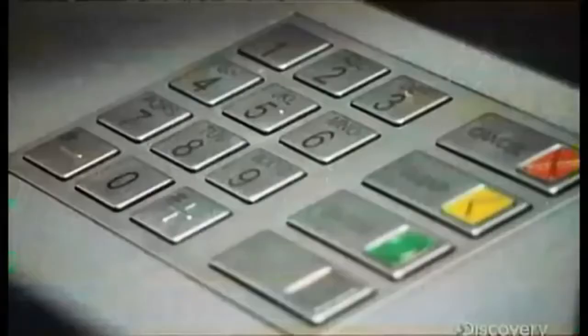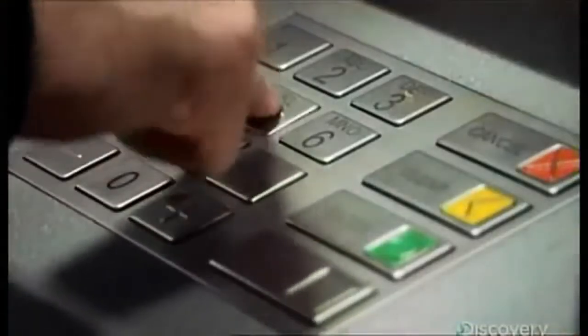The first reader looks for a special code that confirms the card is real. The second reader grabs your account number and password to check against what you've just keyed in.